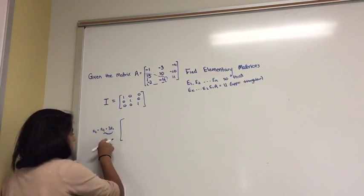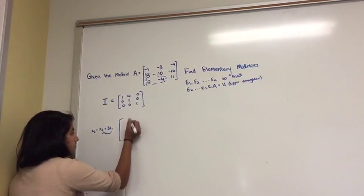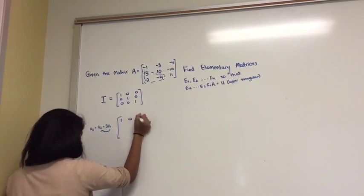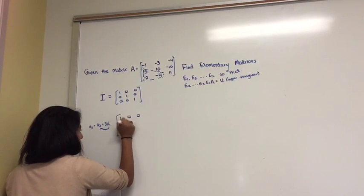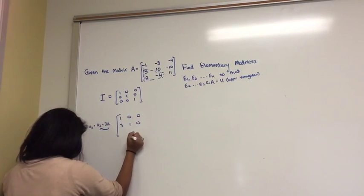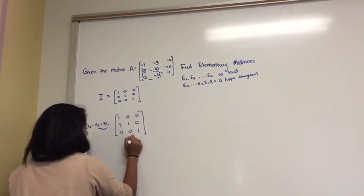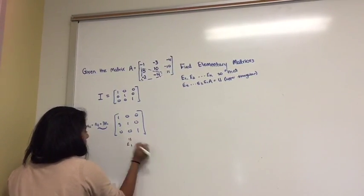And so when you do this operation to the identity matrix, you get the value 1, 0, 0, 3, 1, 0, 0, 0, 1. And now you're going to multiply. This would be your first elementary matrix, E1.